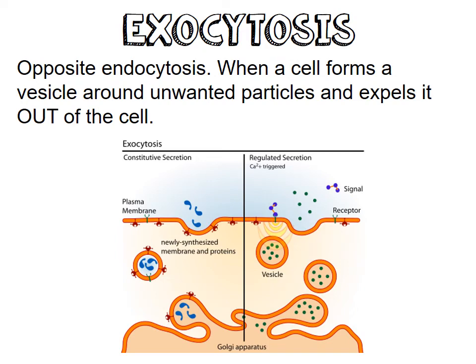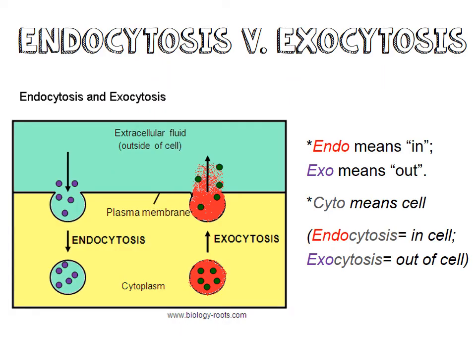Exocytosis is the exact opposite of endocytosis. It's when a cell forms a vesicle around an unwanted particle and expels it out of the cell. In endocytosis, something forms a vacuole and the cell membrane swallows it and brings it in. In exocytosis, the cell plasma membrane pushes the vesicle out. So: endo means in, exo means out, cyto means cell — endocytosis brings it into the cell, exocytosis brings it out of the cell.